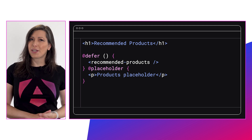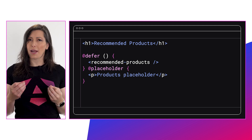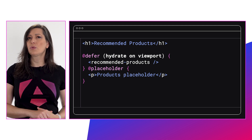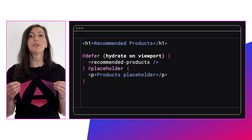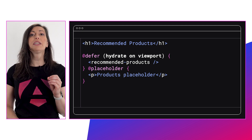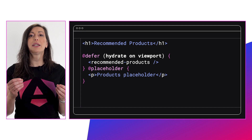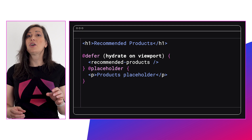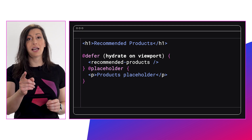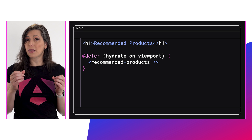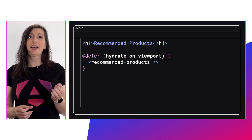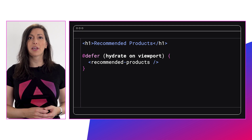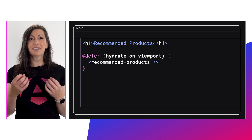To use a hydrate trigger in a defer block, add it as a trigger parameter like this: `hydrate on viewport`. By adding a hydrate trigger we signal to the server that we want the defer block to render the actual content — meaning fetch the defer block dependencies and render the main template of your defer block instead of the placeholder block. Specifically, do all of this on the server but not on the client. When this content reaches the browser, Angular will leave it dehydrated until that hydrate trigger fires.